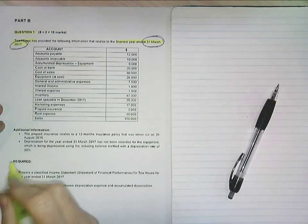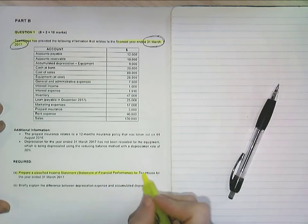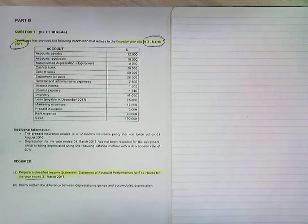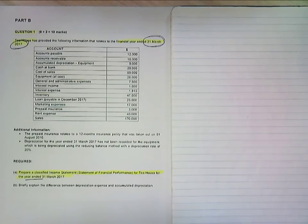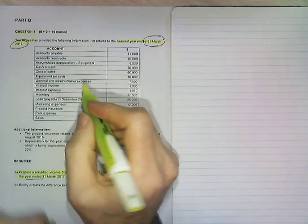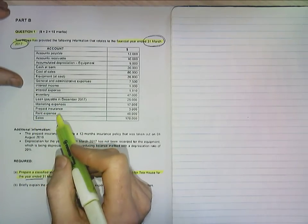And what we've been asked to do, I'm just going to zip down here, prepare a fully classified income statement, or statement of financial performance for T House for the year ended. Yeah, you'll follow me. It is focused, watch this. There you go, it's just the quality of the camera. Alright, let's go. So we've been given a list of accounts. Some of those will be income statement, but some of them won't, so we need to do that.